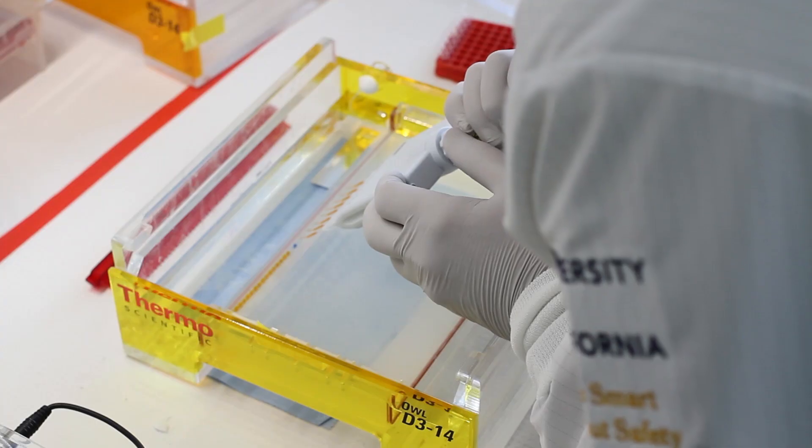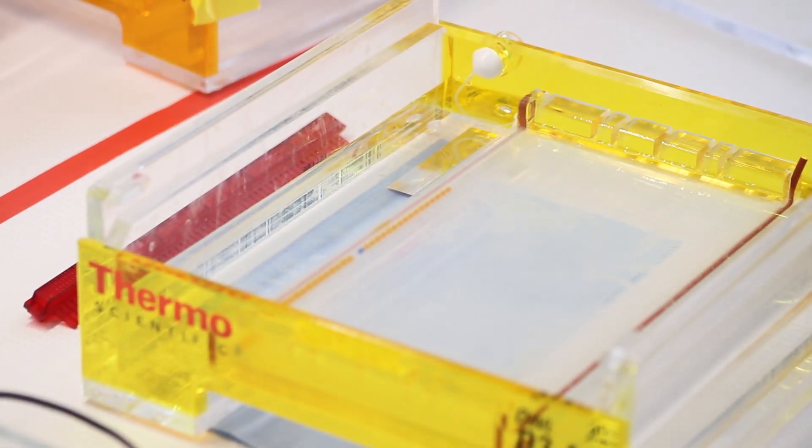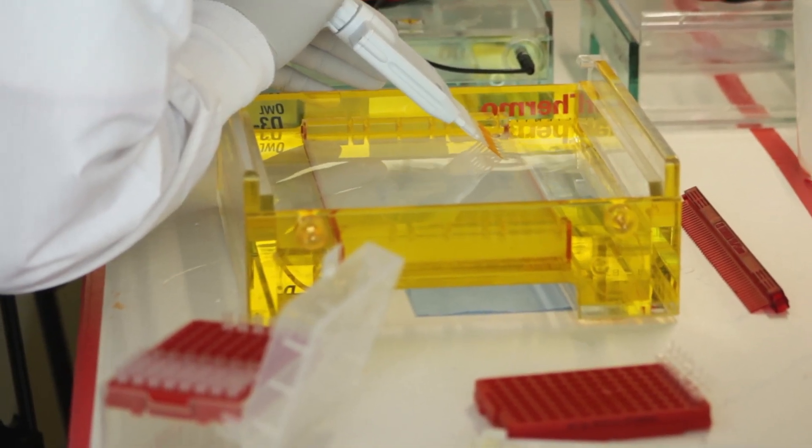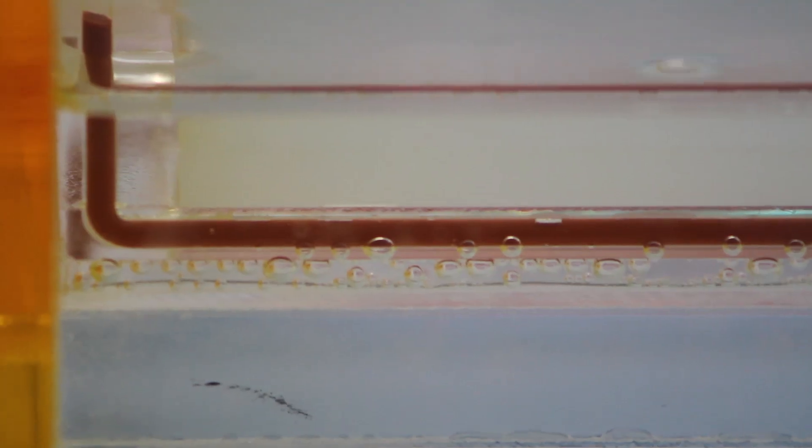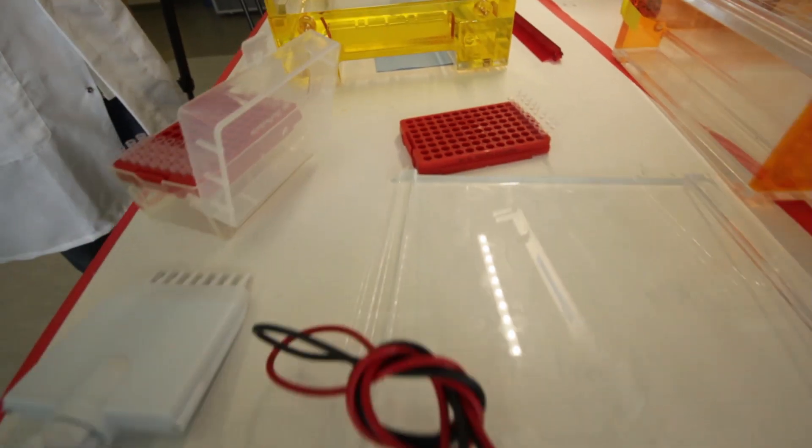When PCR is done, we add dye to the samples and put them into the wells of a gel. Then we run a current through the liquid, and the samples separate based on their size. For example, something that's 200 base pair, like herpes virus, will go through the gel a lot faster than something that's 600 base pair, like phylovirus.